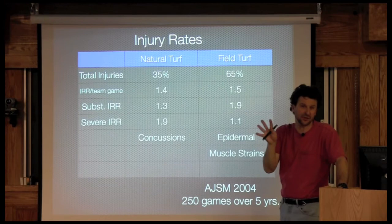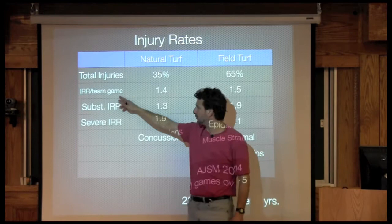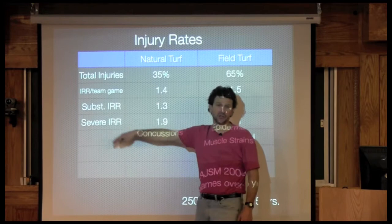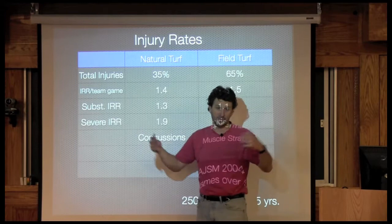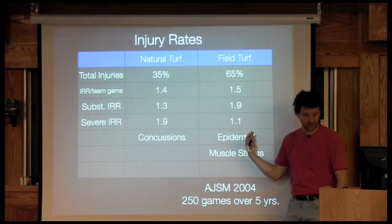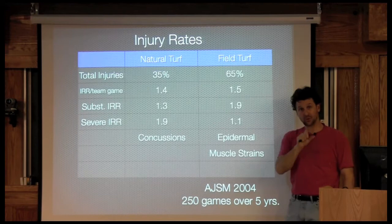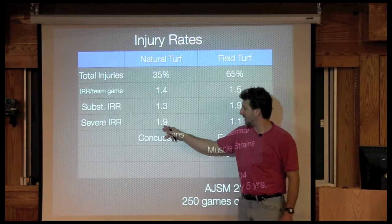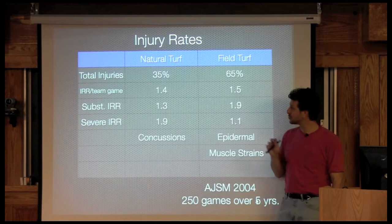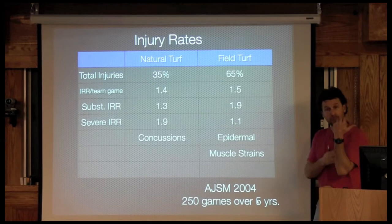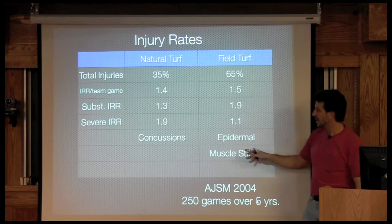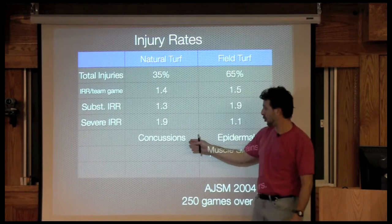Looking at total injuries, injury rate per team game, substantial injury, and severe injury: substantial injury means missing a couple of games, severe means missing months or even the whole season. The synthetic turf system has a higher percentage of total injuries. However, when you look more closely, severe injury ratings on natural turf are much higher than on synthetic turf. While you get more common injuries on field turf — primarily epidermal rashes, rug burns, and muscle strains — concussions and field hardness injuries are much more common on natural turf.